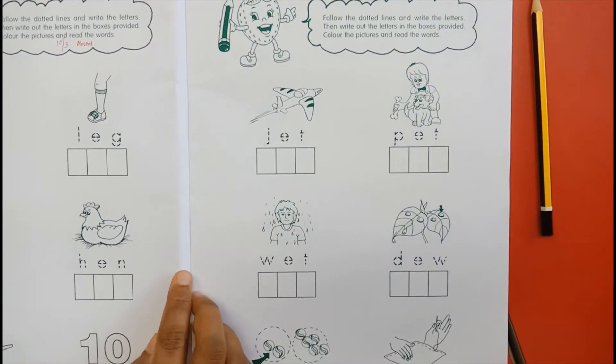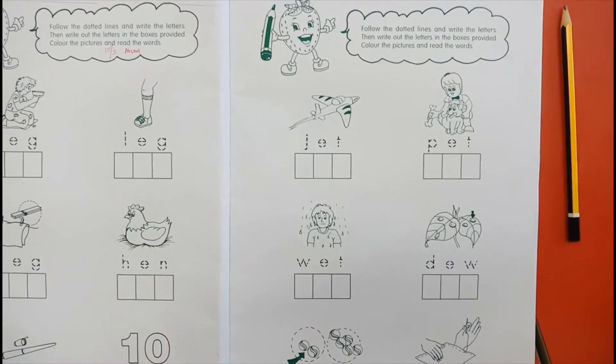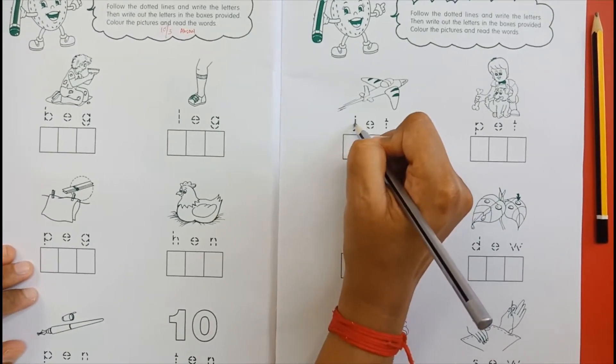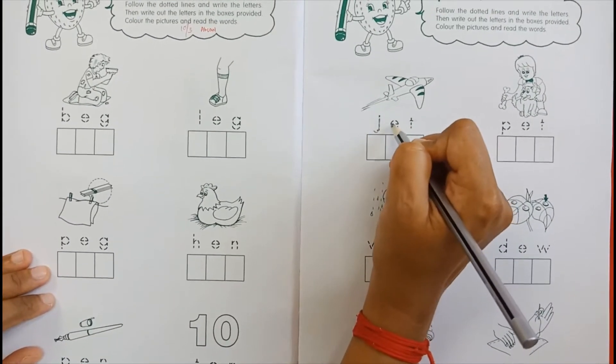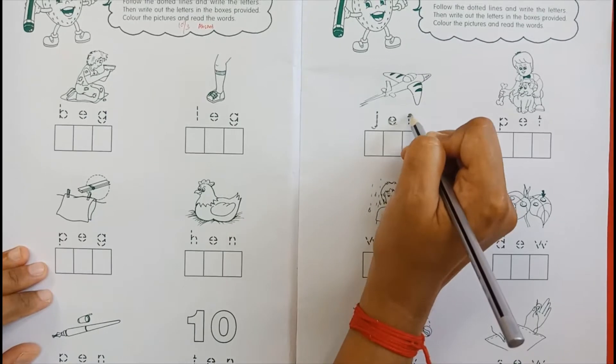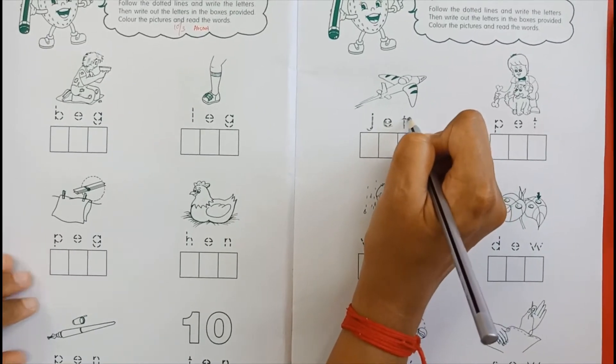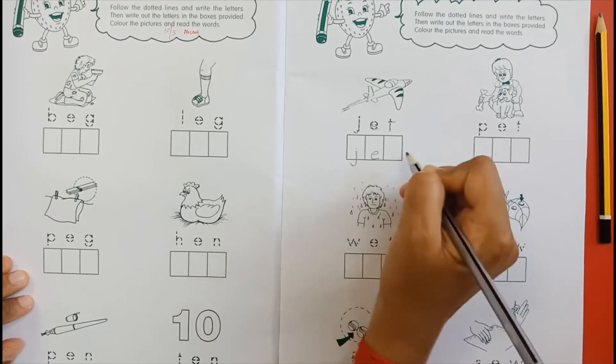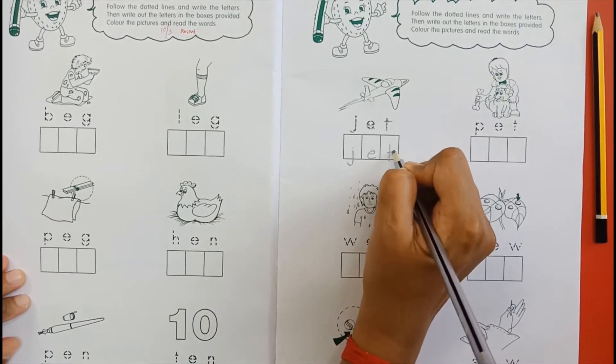Children, take your pencil. Now, we want to trace J-E-T. Jet. J-E-T. Jet. Pet. Next one, pet.